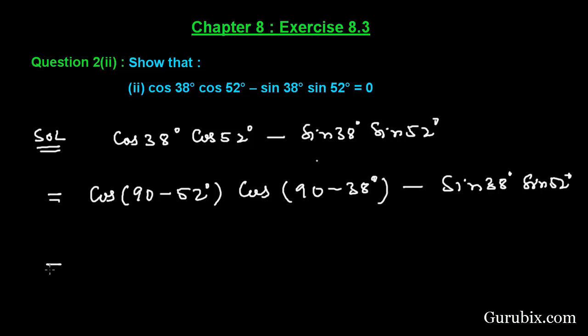So this is equals to, cos 90 minus theta is sin theta, then this is equal to sin 52 degree. It will be sin 38 degree. Here we have sin 38 degree and sin 52 degree.